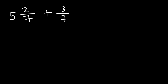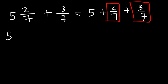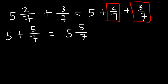So how can we add these two together? 5 and 2 sevenths is the same as 5 plus 2 over 7. And so we can add 2 over 7 with 3 over 7 since they have the same denominator. 2 over 7 plus 3 over 7 is 5 over 7. And so 5 plus 5 over 7 can be written as 5 and 5 sevenths. So this is the answer.